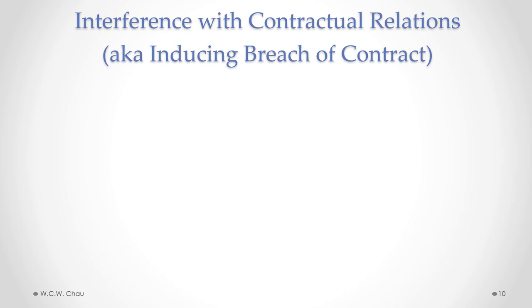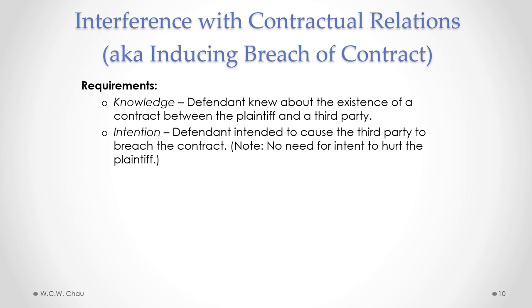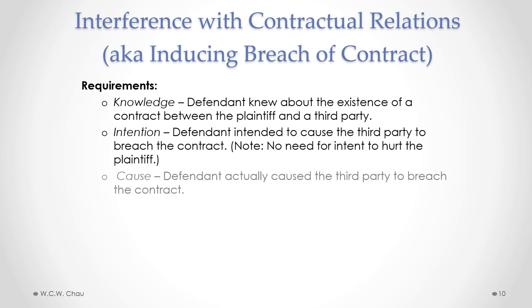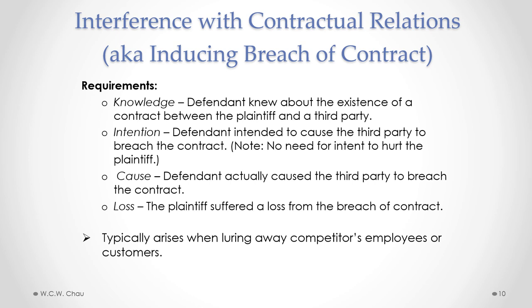Let's recap the legal requirements for the tort of interference with contractual relations. First, knowledge: the defendant had to actually know about the existence of a contract between the plaintiff and a third party. Second, intention: the defendant intended to cause the third party to breach the contract. Third, cause: the defendant actually caused the third party to breach the contract. Fourth, loss: the plaintiff suffered a loss from the breach of contract. This tort typically arises when one company is trying to lure away employees or customers of another company.